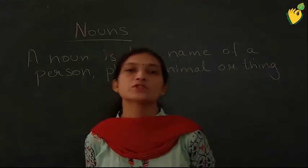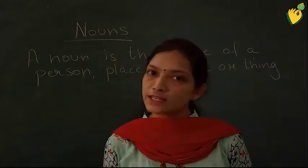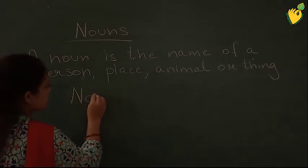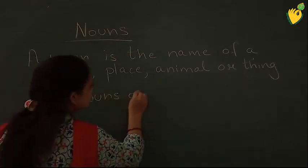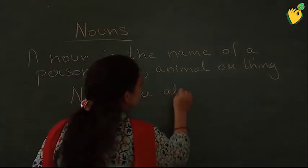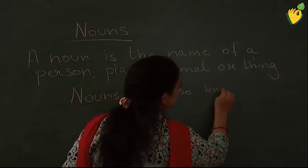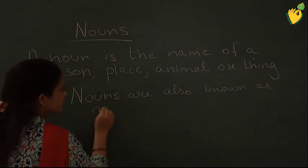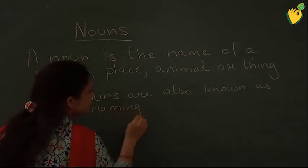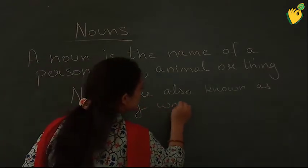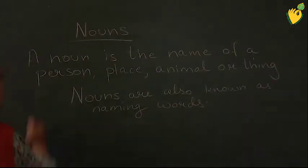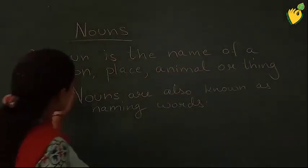So these are all names, and these names are all known as nouns. Nouns are also known as naming words. A noun is the name of a person, place, animal, or thing.